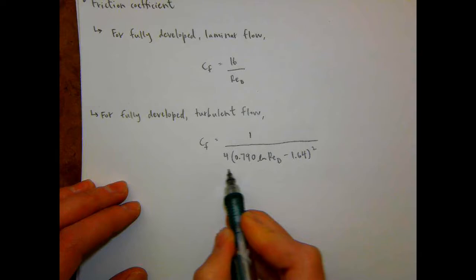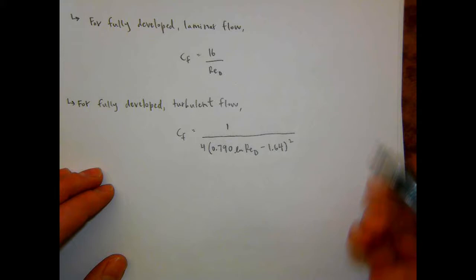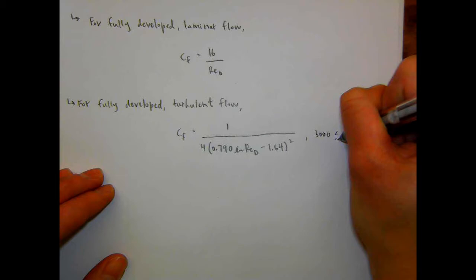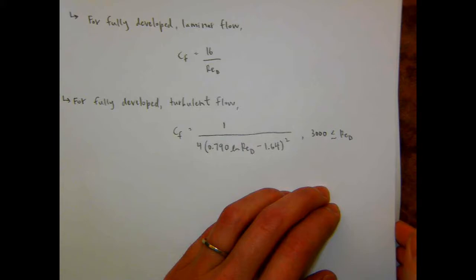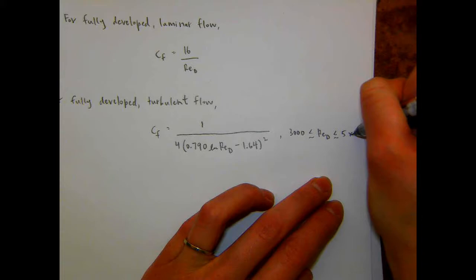That entire quantity — (0.790 ln(Re_D) minus 1.64) squared — is squared, besides the leading factor of one-fourth. This correlation applies for Reynolds numbers between approximately 3,000 and 5 times 10 to the sixth. Only the Reynolds number is inside the natural log.